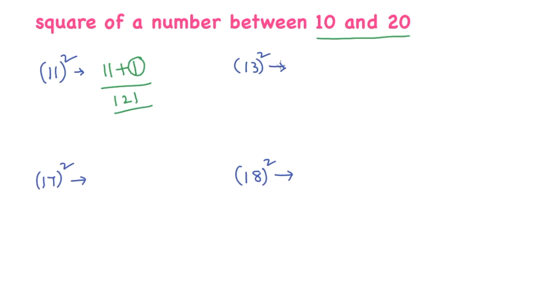13 square. Now, to calculate 13 square, I'll write 13 plus 3. Square this number. 3 square is what? 9. 13 plus 3 is what? 16. So, 13 square is 169.